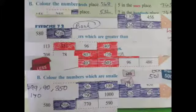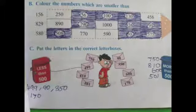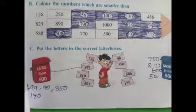The next activity is to color the number which is smaller than the given number. The outside number is 156. Compare with 156 — the numbers 56, 100, and 130 are all smaller than 156, so color those. Similarly, complete the remaining items.